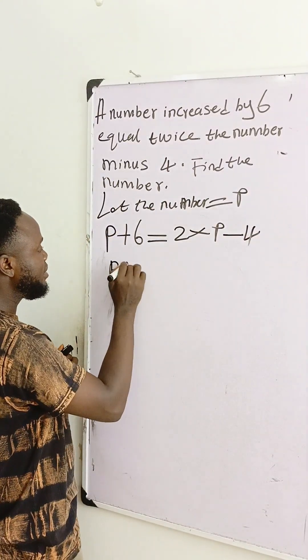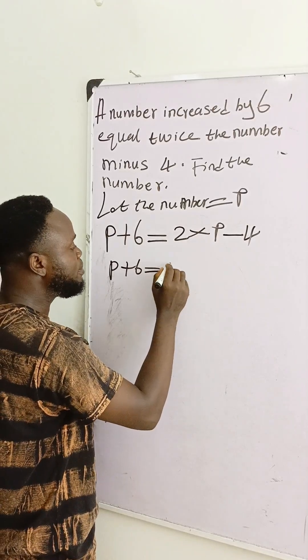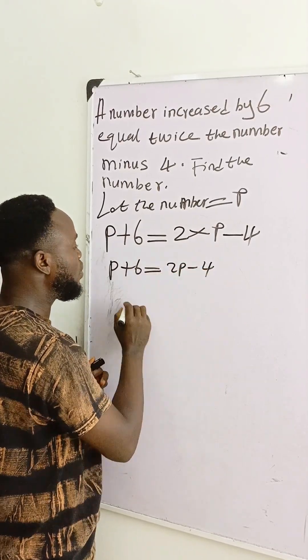Then this is P plus six is equal to two times P, which is 2P, minus four. We collect like terms.